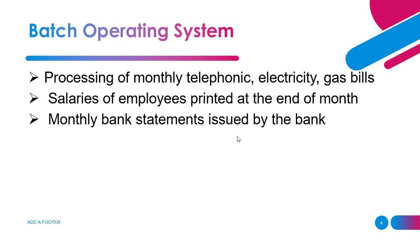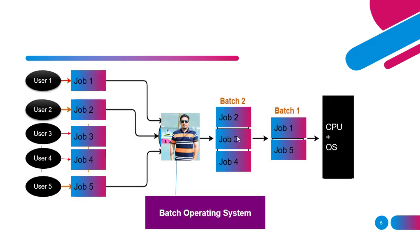Third, monthly bank statements issued by the bank — which show a record of all credits and debits made throughout the month — are also a classical example of a batch operating system. If you liked this video, please share it. If you have any questions, ask in the comment section and I will definitely respond. Thank you and have a great day.